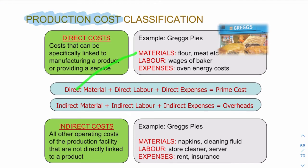Direct costs can be thought of as everything you can see: pick up your pie and you see the ingredients (direct materials), someone in the kitchen working (direct labor), and all the equipment running (direct expenses). These three together give you the prime cost.